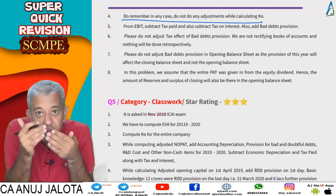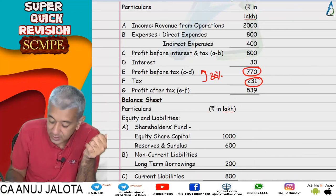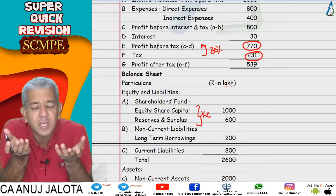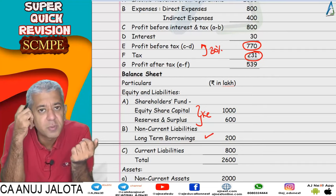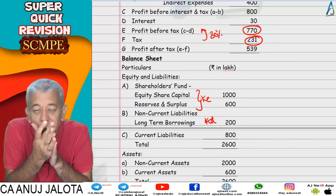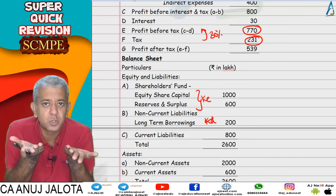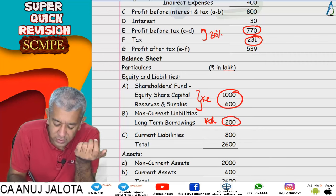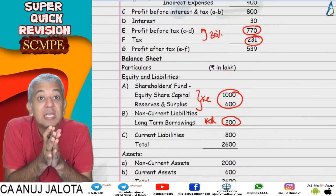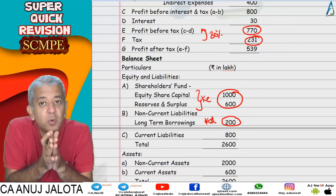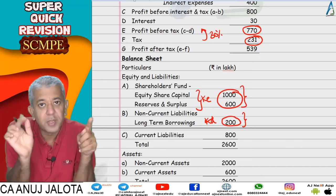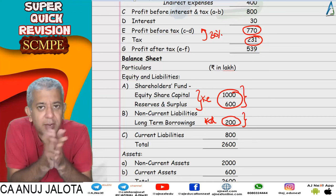For Ko you require individual components: equity and reserves and surplus both give you Ke or Kr — in any case both are the same. Long-term borrowings will give you Kd. Once you compute Ke and Kd, compute Ko using book value weights. In this question only book value weights were given — 1600 for equity and 200 for debt. Below that, bad debt provisions are given which you consider when computing EVA, not Ko. Make your table, calculate weights out of 100, and compute Ko.